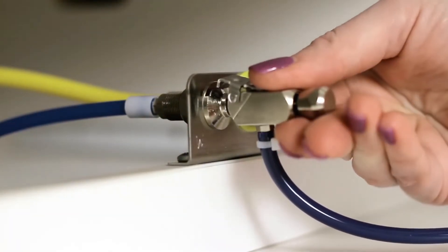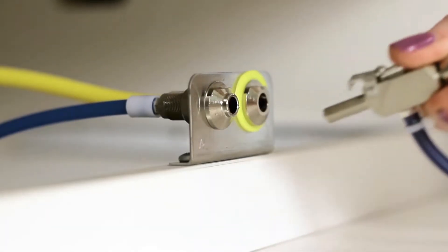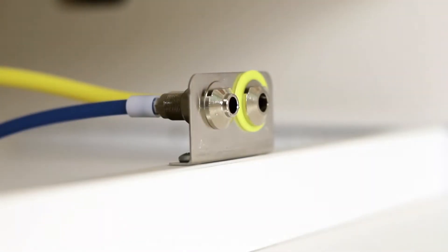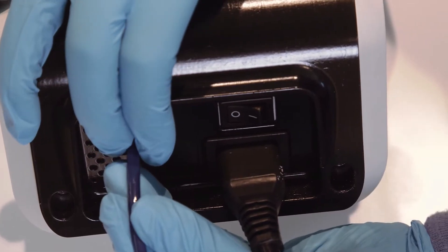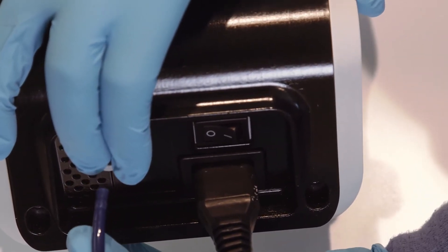To remove the water line, first turn the water to the line off, then disconnect the quick disconnect from the dental office water supply. In order to remove the hose from the system, simply push on the outer ring of the system's water inlet and gently pull out the water line.